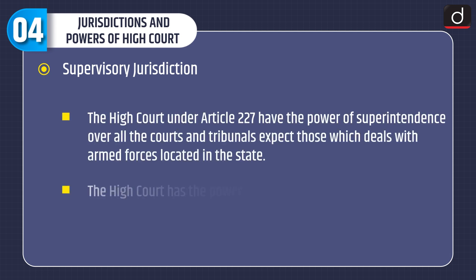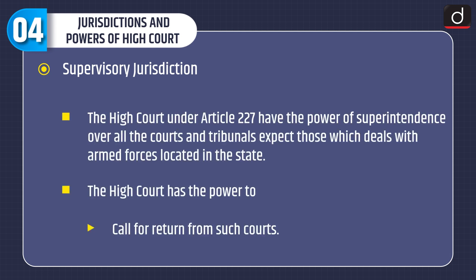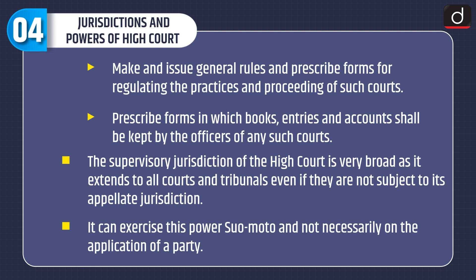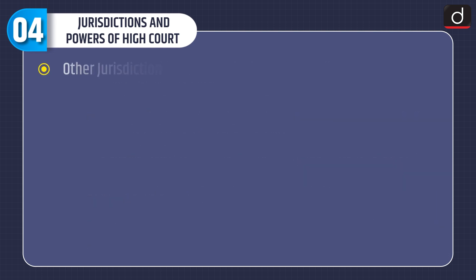Under Article 227, the High Court has the power of superintendence over all the courts and tribunals except those dealing with armed forces located in the state. The High Court has the power to call for returns from such courts, make and issue general rules and prescribe forms for regulating practices and proceedings, and prescribe forms in which books, entries and accounts shall be kept. This supervisory jurisdiction is very broad, extends to all courts and tribunals even if not subject to its appellate jurisdiction, and can be exercised suo motu.